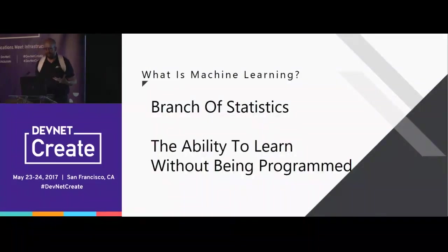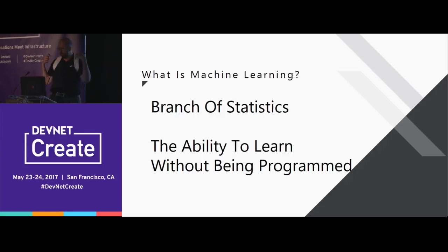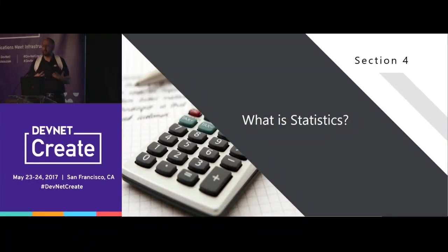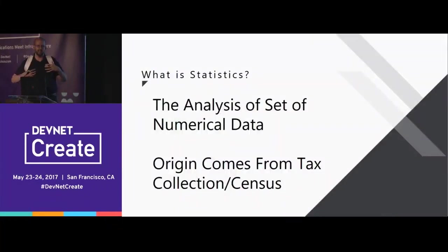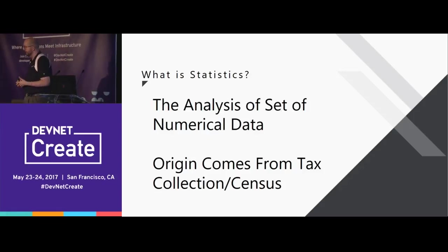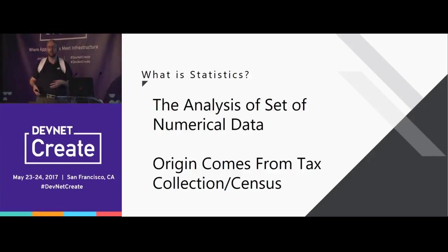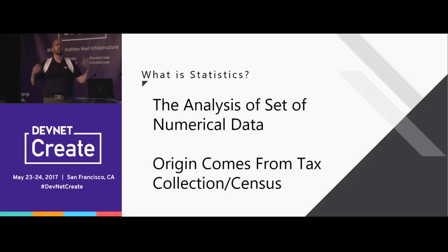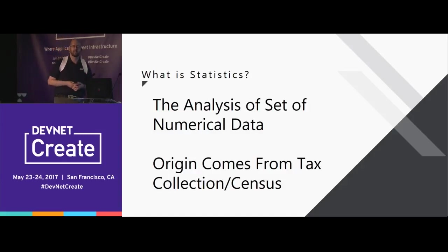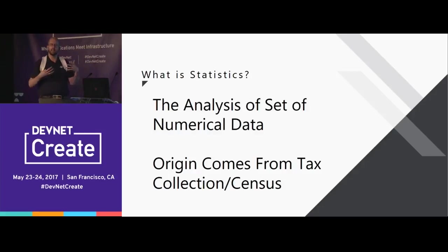So let's talk a little bit about what machine learning is. It's a branch of statistics — basically just the ability to learn without being explicitly programmed. Statistics is just the analysis of a large set of data, and it's relatively new as a mathematical field. It came about from the study and collection of census data and tax data. In Germany in the 1700s, they said, 'We've got all this data, we need to glean some insights,' and a book called 'The Study of State' was written — that's where we got the origin of the word statistics.